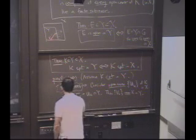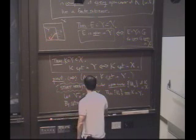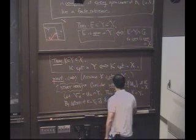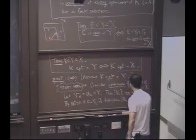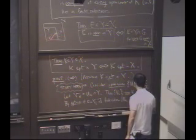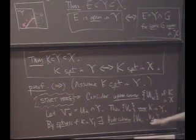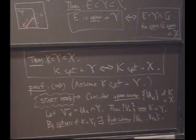So there exists a—so probably should tell the readers—this is by compactness of K in Y, there exists a finite subcover, which we will, we can denote V_{α_1} through V_{α_n}. Nice. So we're just turning our intuition into a proof.